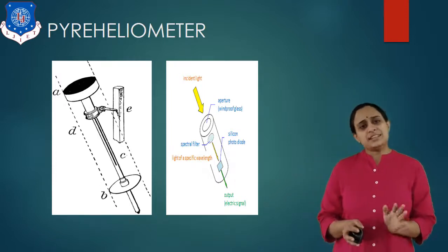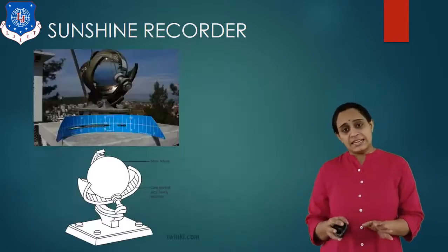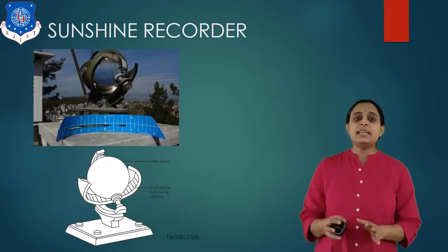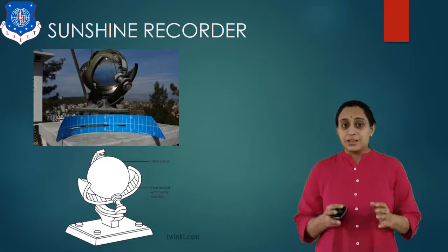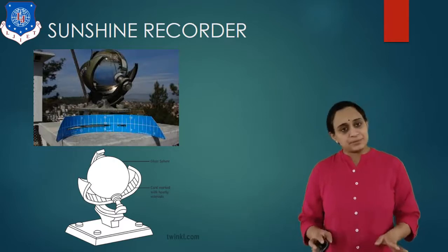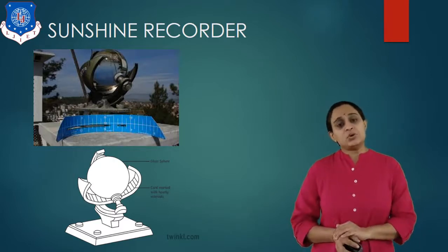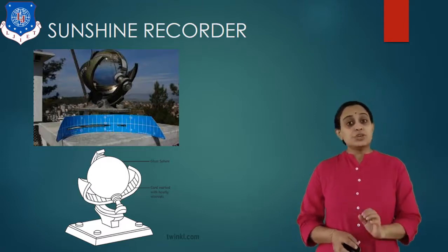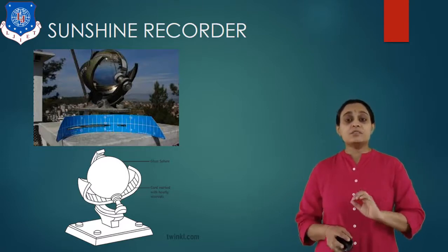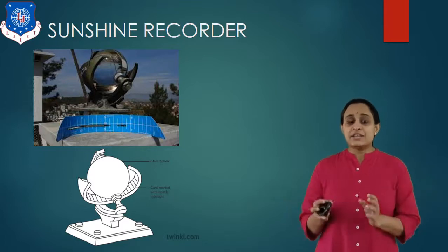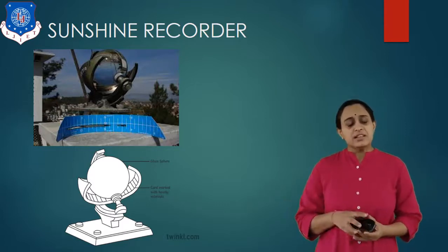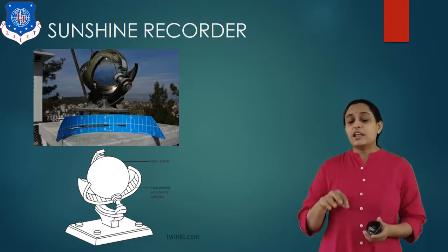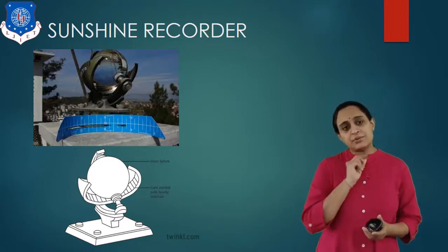Solar radiation measuring instruments are based on an EMF system — that is, the thermocouple principle. Now let us study about the sunshine recorder. It is used to measure the duration of the day when there is bright sunshine giving beam radiation. This sunshine recorder can only measure beam radiation.